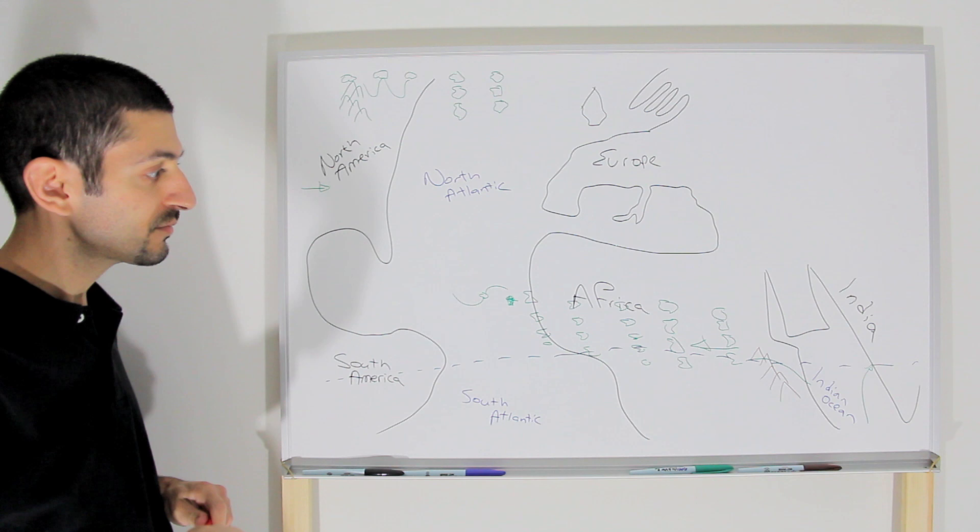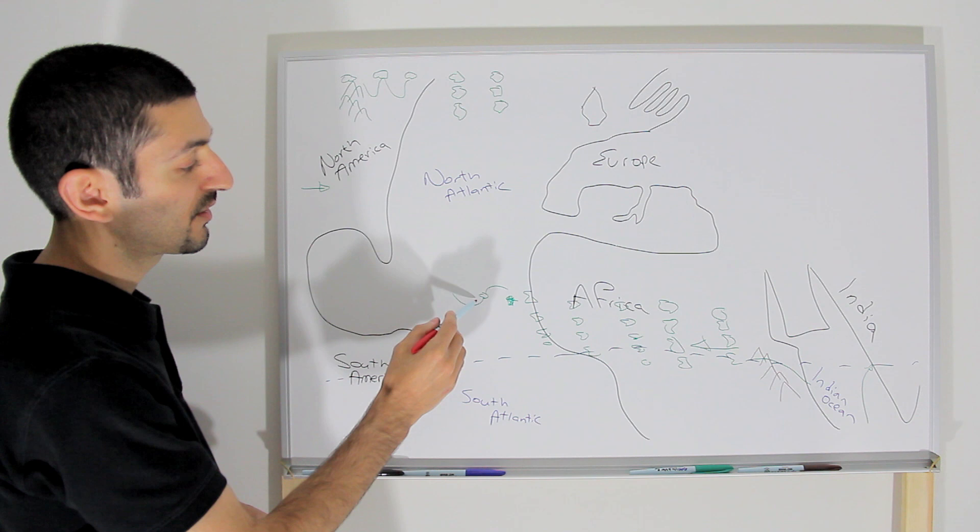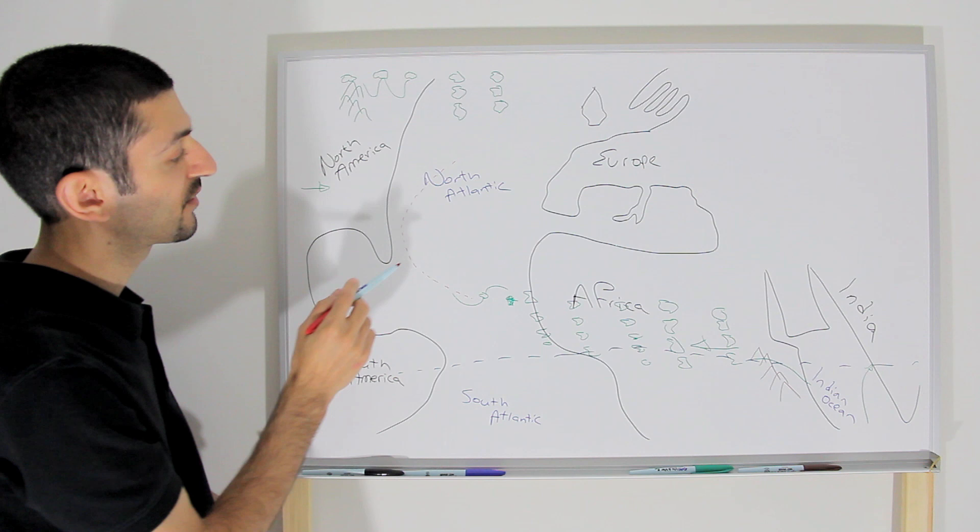But what it did was, it started here we have the Cape Verde islands, we've got Africa, Europe, North America, South America. And it started off the Cape Verde islands and it came this way and then it went to the right.